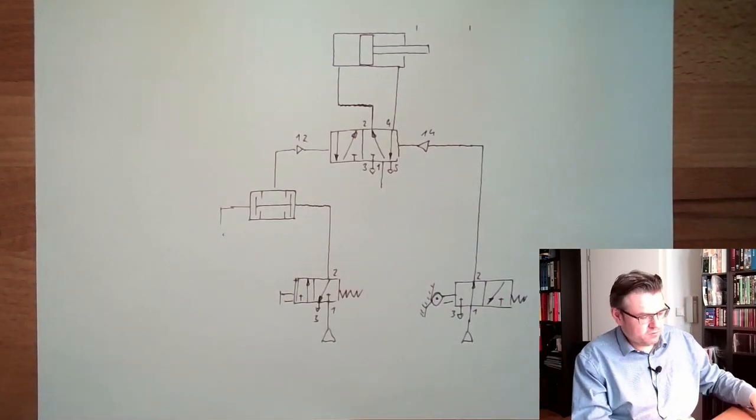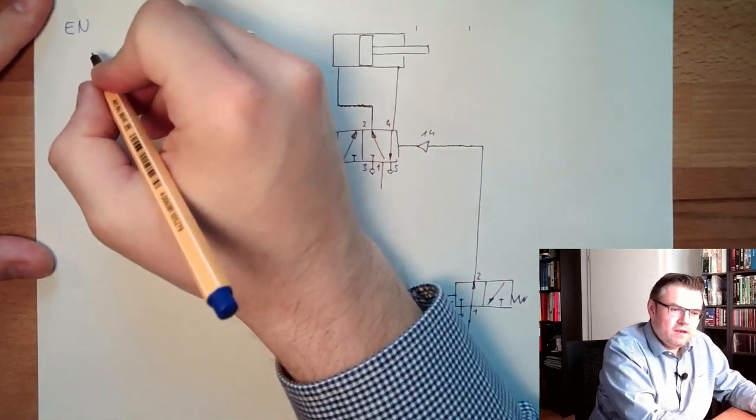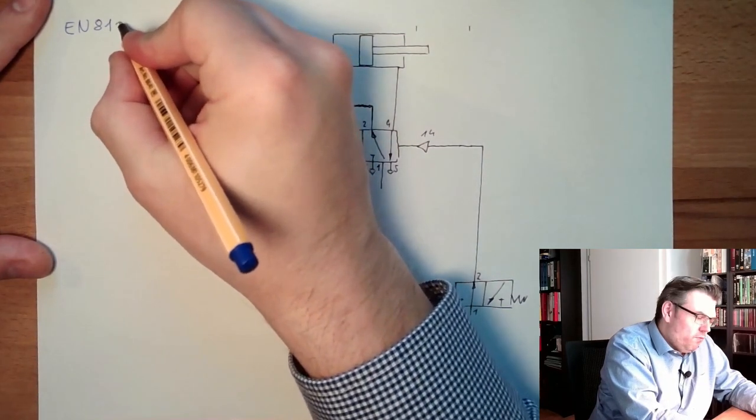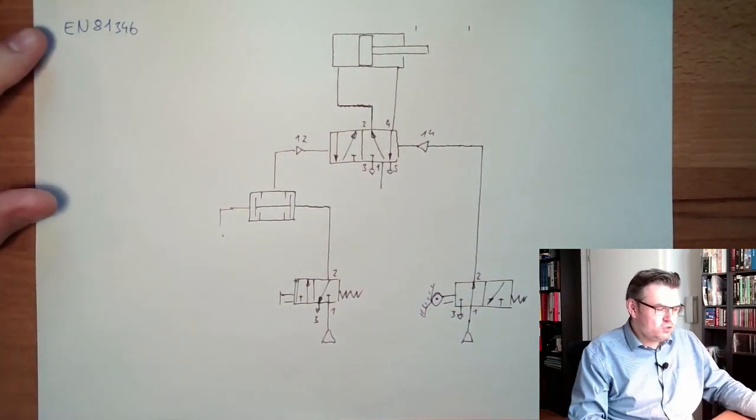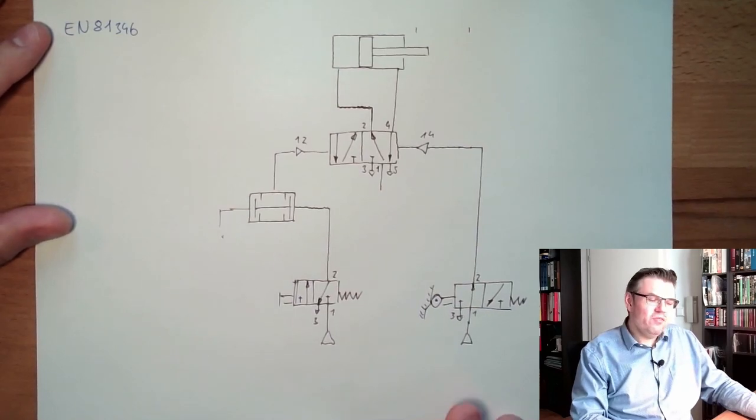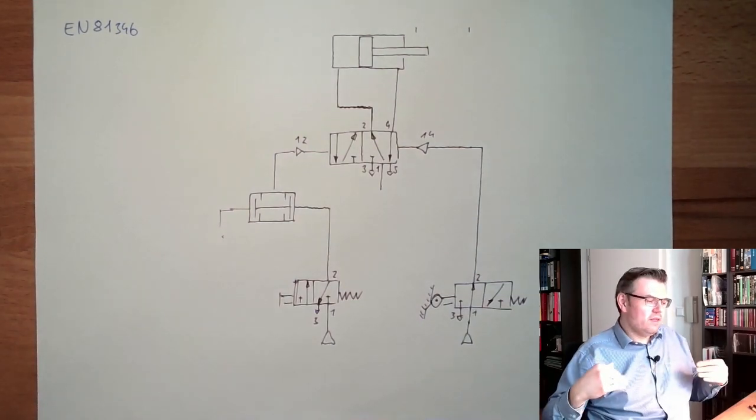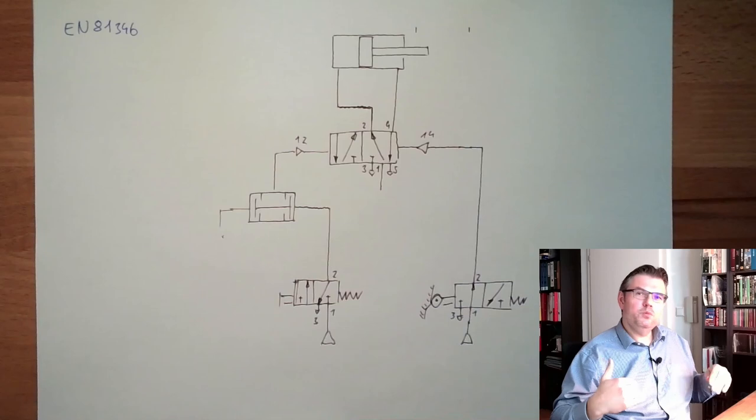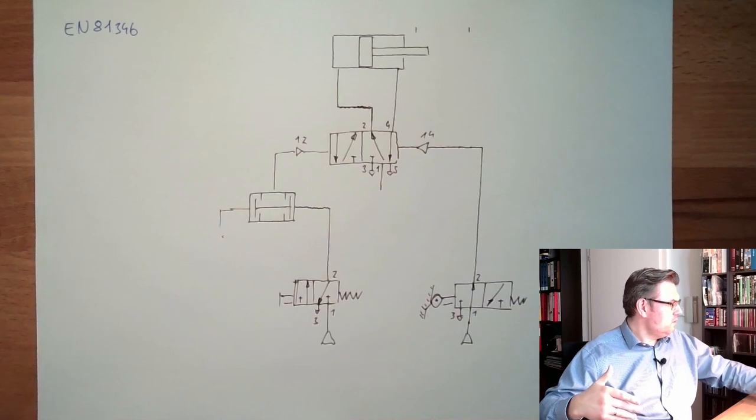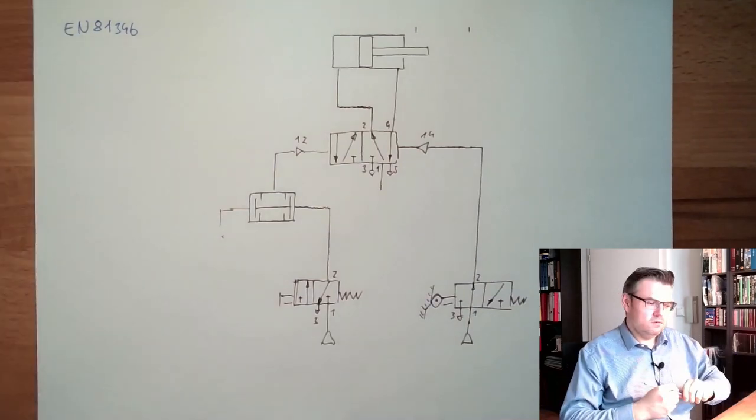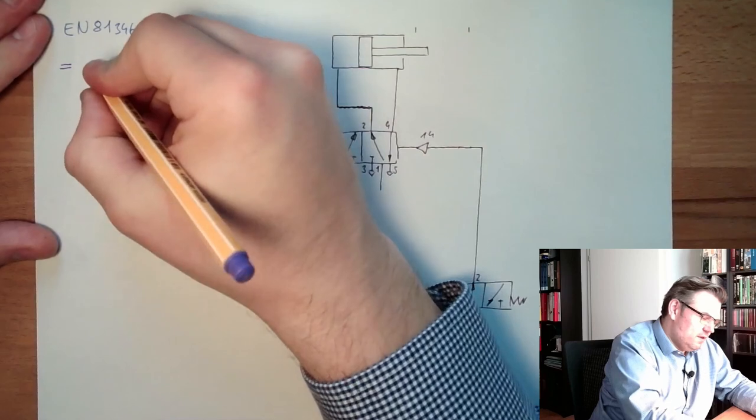There are standards for this. One standard is for instance the European standard EN 81346. This shows how we shall name things. There are several possible aspects under which we can name them. There is the aspect of function. If we want to name them according to function, the prefix of the names is this equal sign. This is a function aspect.